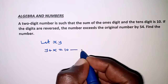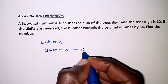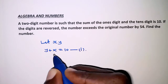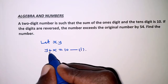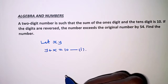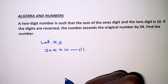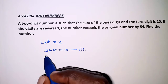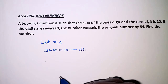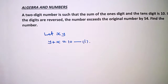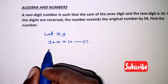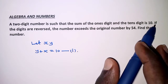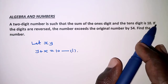This forms the first equation. We have two unknowns to solve, which means we need to solve simultaneous equations. To get the second equation, we look at the next part of the problem statement.